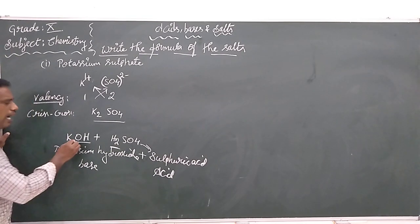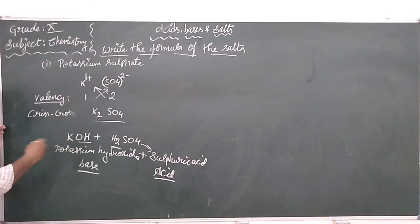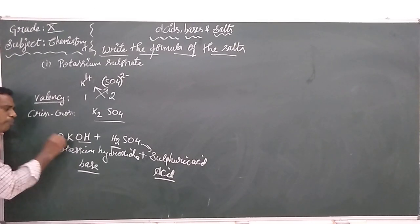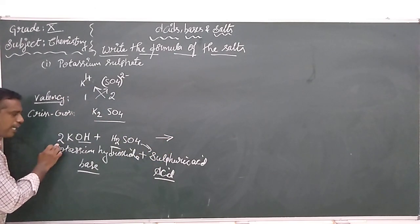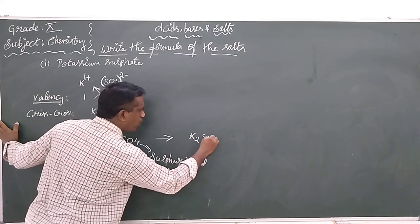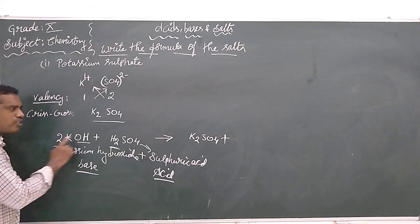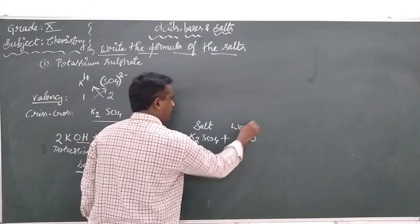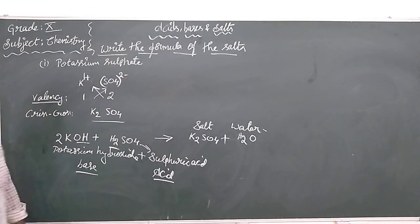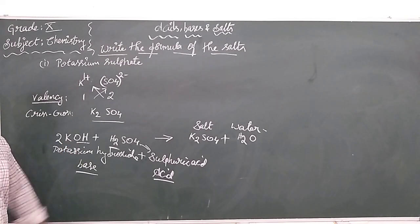When potassium hydroxide reacts with sulphuric acid — the acid is reacting with a base — to balance we need two potassium hydroxides reacting with sulphuric acid to form K2SO4 (potassium sulfate) and water. The two OH- ions react with 2H+ ions to form H2O — that is salt and water. Potassium sulfate is obtained by reacting potassium hydroxide with sulphuric acid.